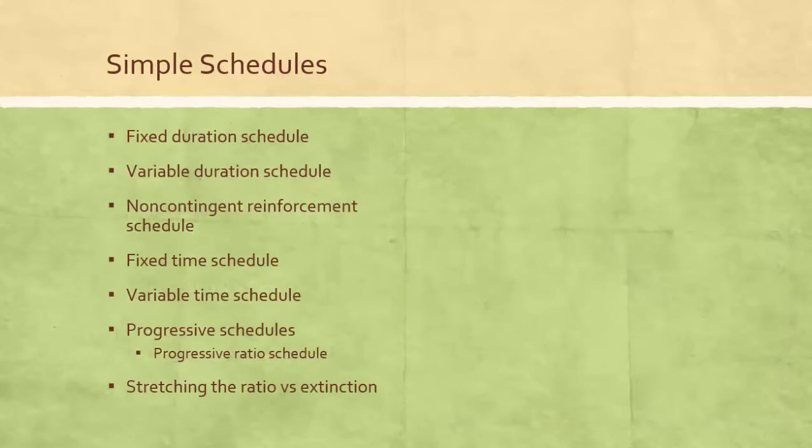Either the number of times the behavior must occur to be reinforced changes or the reinforcement gets smaller. Both may happen, making the learner work harder for less until the behavior declines or stops entirely. This point is called the break point.